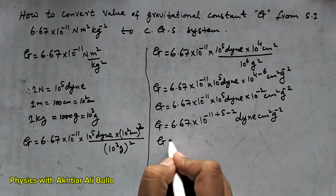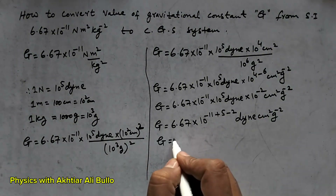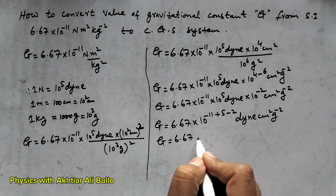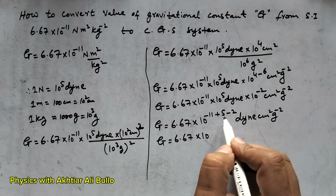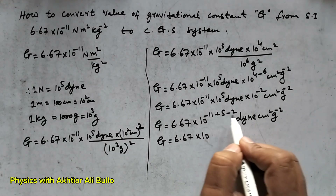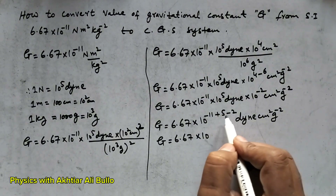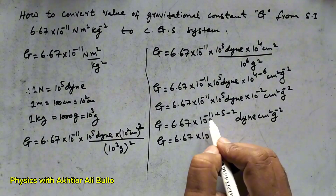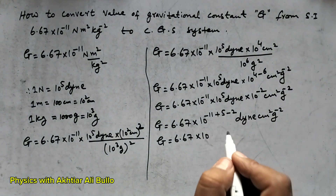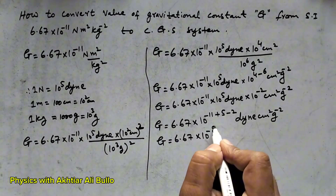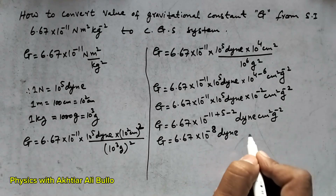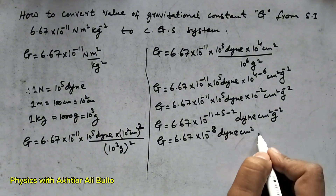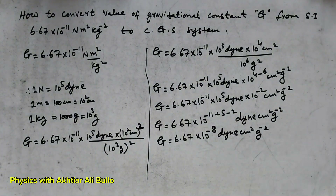The value of the gravitational constant will be 6.67 × 10 raised to the power of (5 − 2 + (−11)) = (5 − 2 = 3, and 3 − 11 = −8). So the final value is 6.67 × 10⁻⁸ dyne centimeter squared per gram squared.